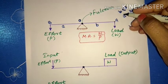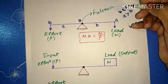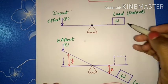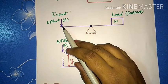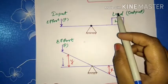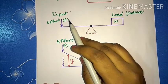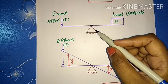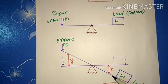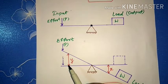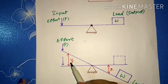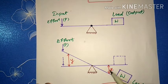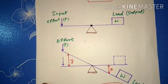Now, considering a lifting machine whose efficiency is required to be found out. Here I have shown that in the case of a lever, on one side the load is placed, and on the other end the effort is applied. Load acts as my output and effort acts as my input. When effort is applied, due to that effort, the load is displaced by distance x, and the effort is displaced by distance y. That means y is the distance moved by the effort in lifting the load, and x is the distance moved by the load.